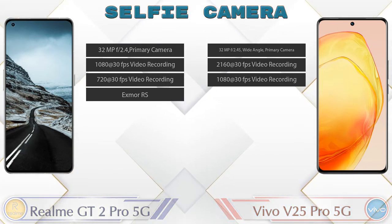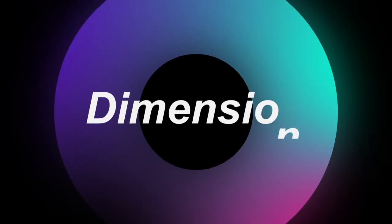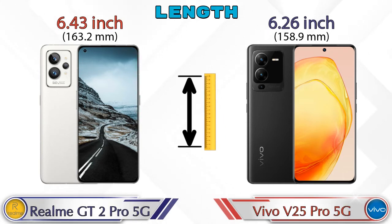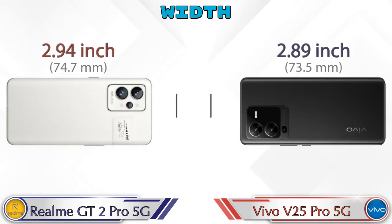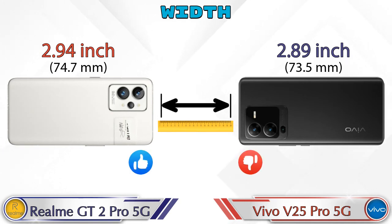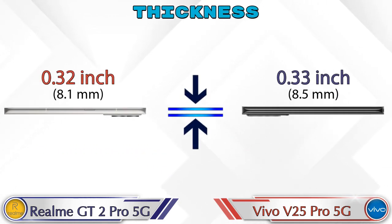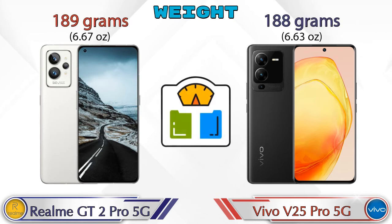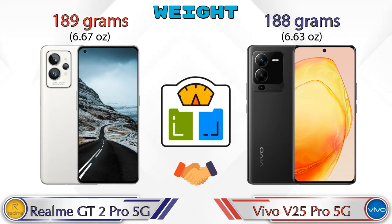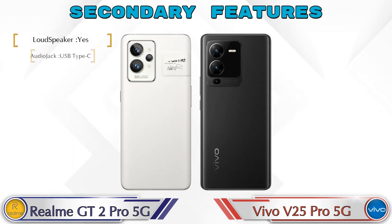For dimensions, the GT2 Pro is 6.43 inches long and the V25 Pro 5G is 6.26 inches, making it shorter. Width is 2.94 inches on the GT2 Pro and 2.89 inches on the V25 Pro 5G. Thickness is 0.32 inches on the GT2 Pro and 0.33 inches on the V25 Pro 5G, making the V25 Pro slightly thicker. Weight is 189 grams for the GT2 Pro and 188 grams for the V25 Pro 5G — almost the same.